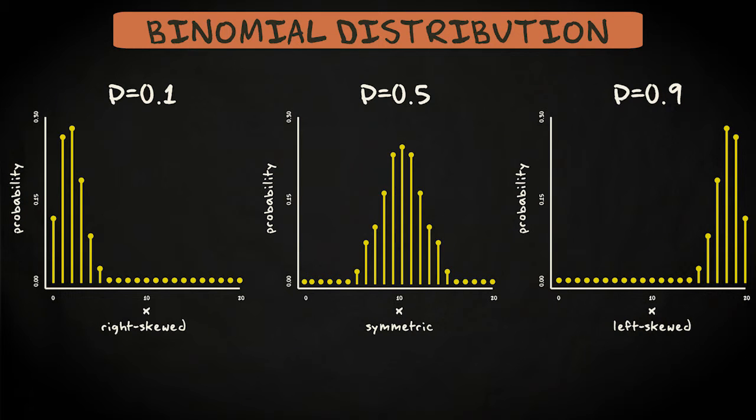In general, a binomial distribution with a low probability of success is right skewed, while that with a high probability of success is left skewed.